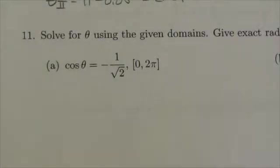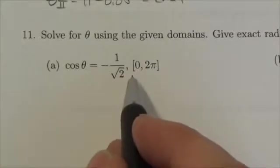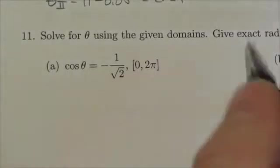Hi everyone. So this question is asking me to solve cosine of theta equals negative 1 over root 2 in this closed interval between 0 and 2 pi.